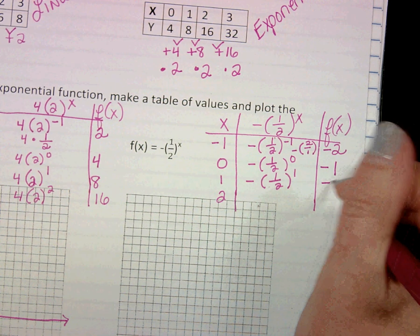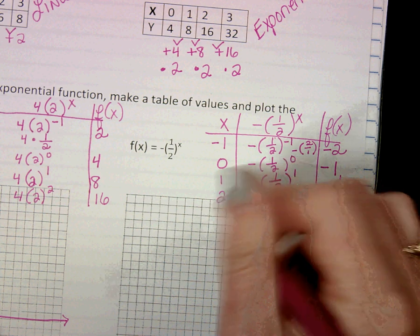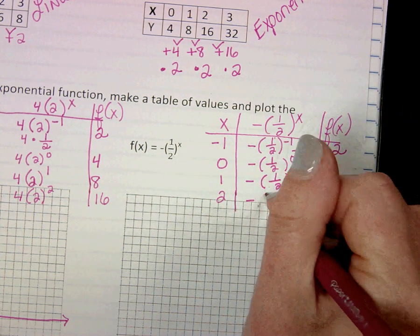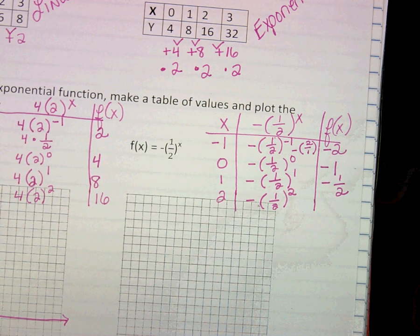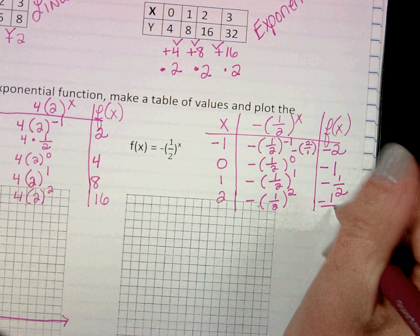Next one's also pretty easy. That's going to be negative a half. Remember, we're doing the exponent first, and then applying the negative sign or anything in front of it. This one's a little bit tricky. One half squared would be one fourth. And so then that would be negative one fourth.